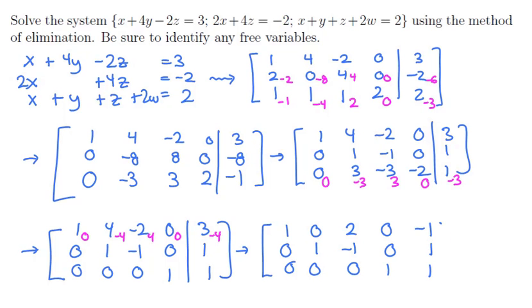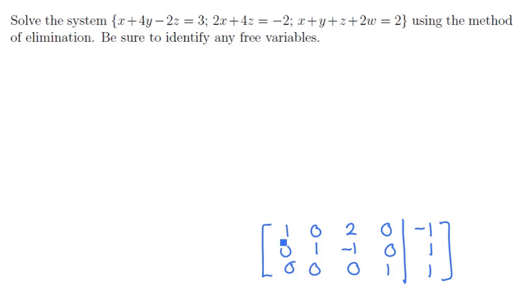This matrix is now in reduced row echelon form. We should be able to use this to find the answers very efficiently. Let's translate them back into a system of equations. The first row translates to x plus 0y plus 2z plus 0w equals minus 1. The second equation translates to y minus z plus 0w equals 1, and the last equation translates to w equals 1.